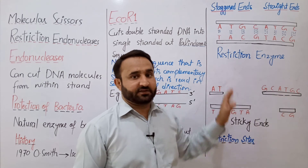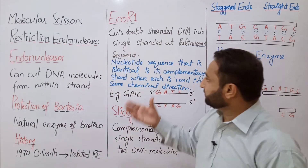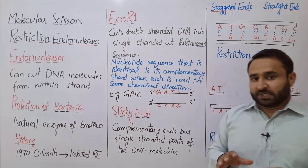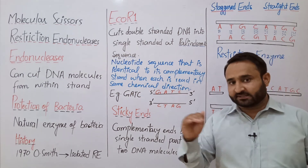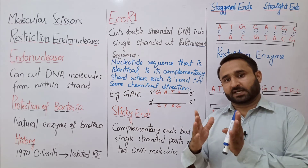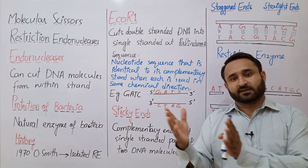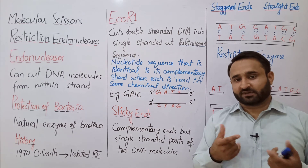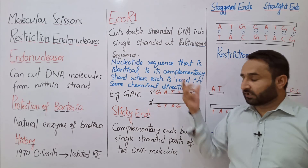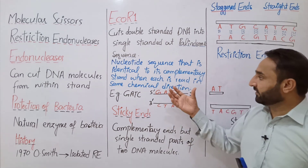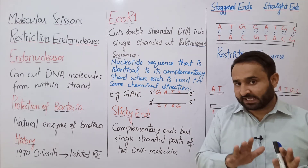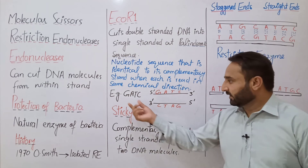What is a palindromic sequence? In our book's glossary, the definition is: a palindromic sequence is a nucleotide sequence that is identical to its complementary strand when each is read in the same chemical direction. Think of the word 'madam' — read it from here: madam; read it from the other side: madam. This is a palindromic sequence. For example, the sequence G-A-T-C.